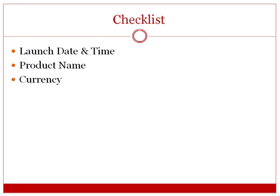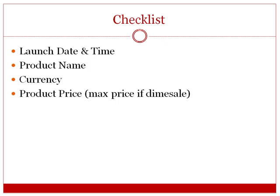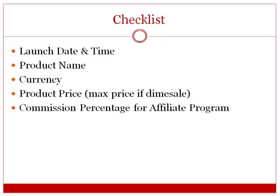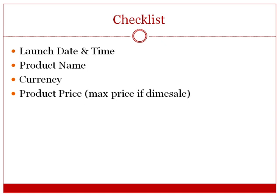You're also going to need the product name — that's self-explanatory. You'll need to know the currency in your country that you want to be charging, and you want to know the product price. If you're going to be using dime sales, this product price will be the maximum price. For example, if you start a dime sale at a dollar and the maximum is $17, every time somebody buys it goes up until it hits $17. This applies to recurring products and one-time products as well.